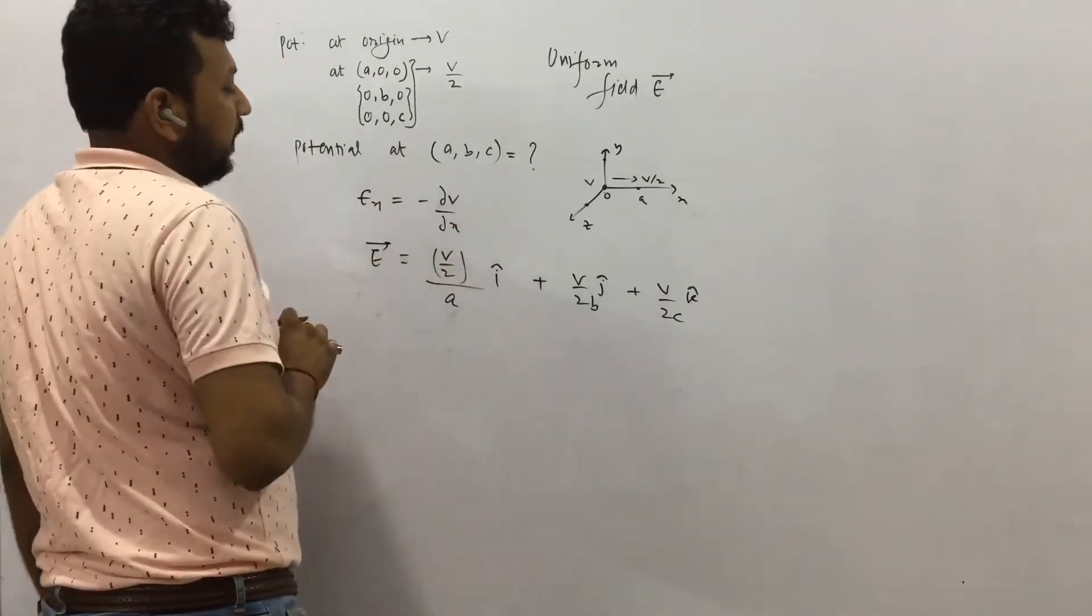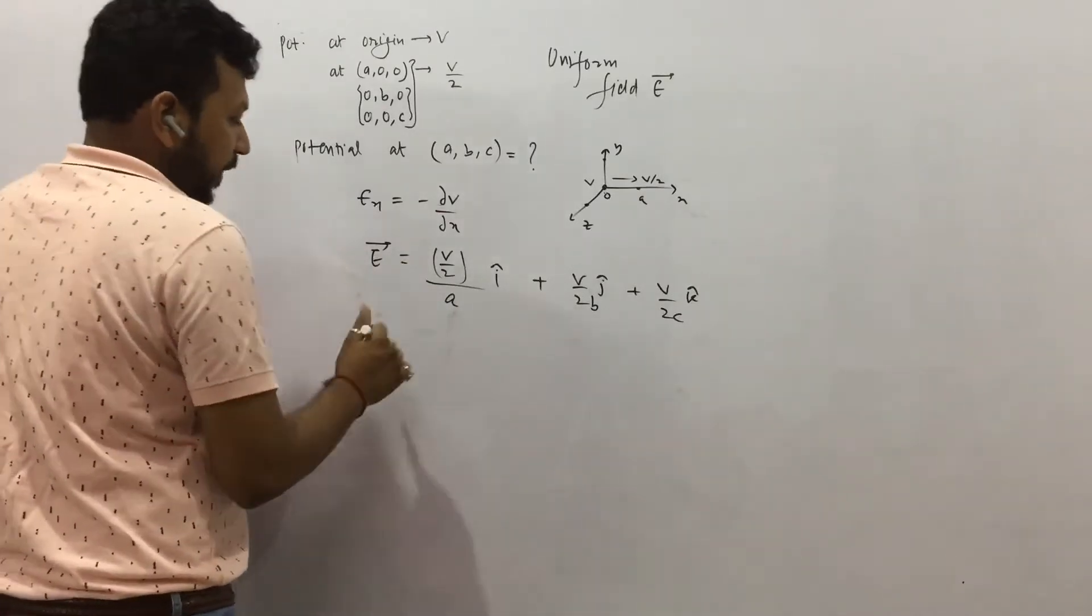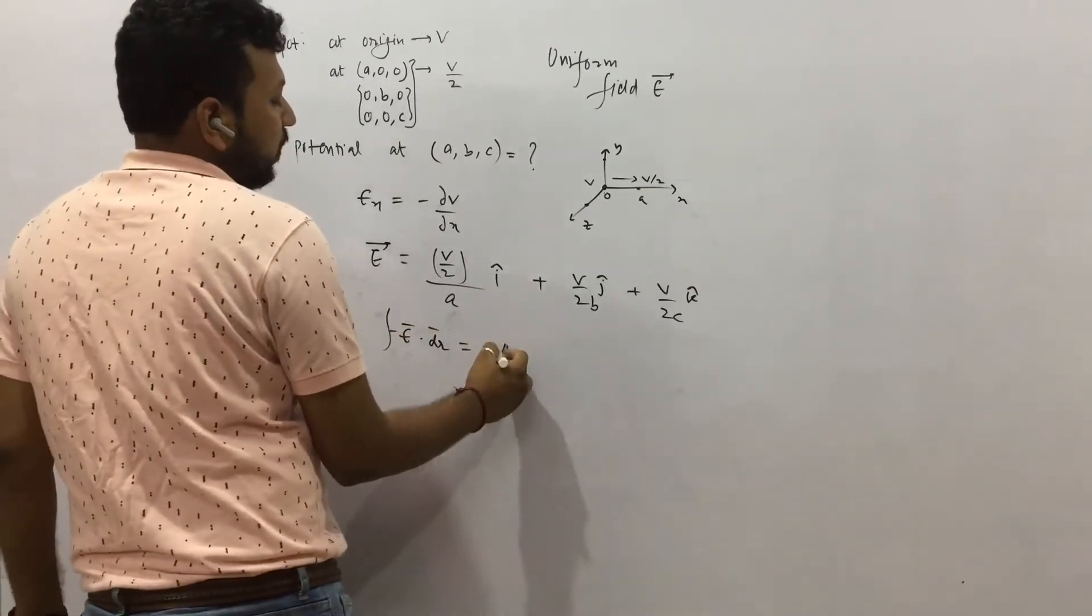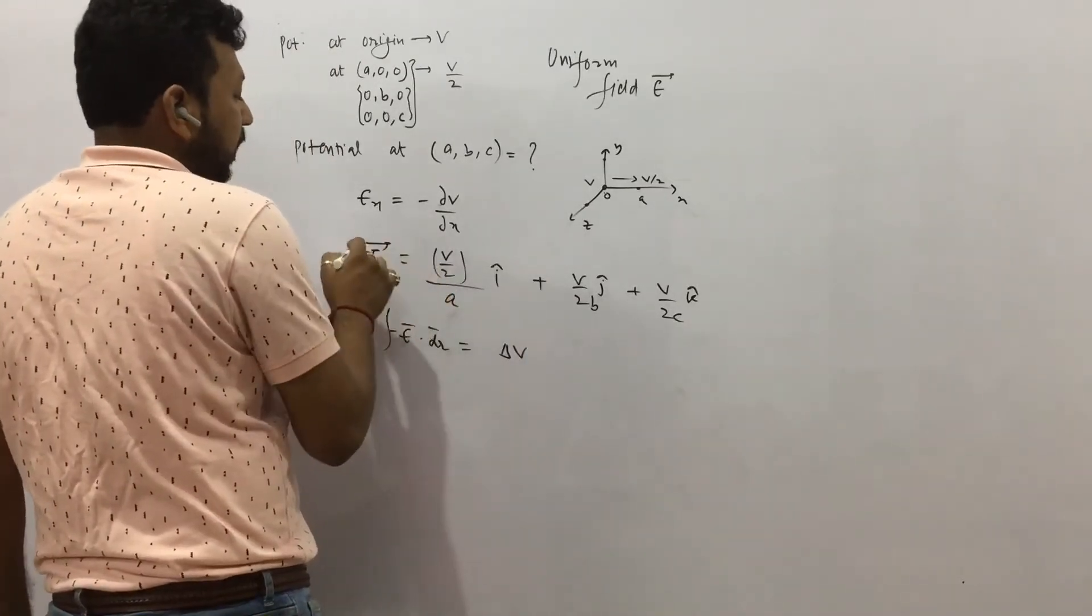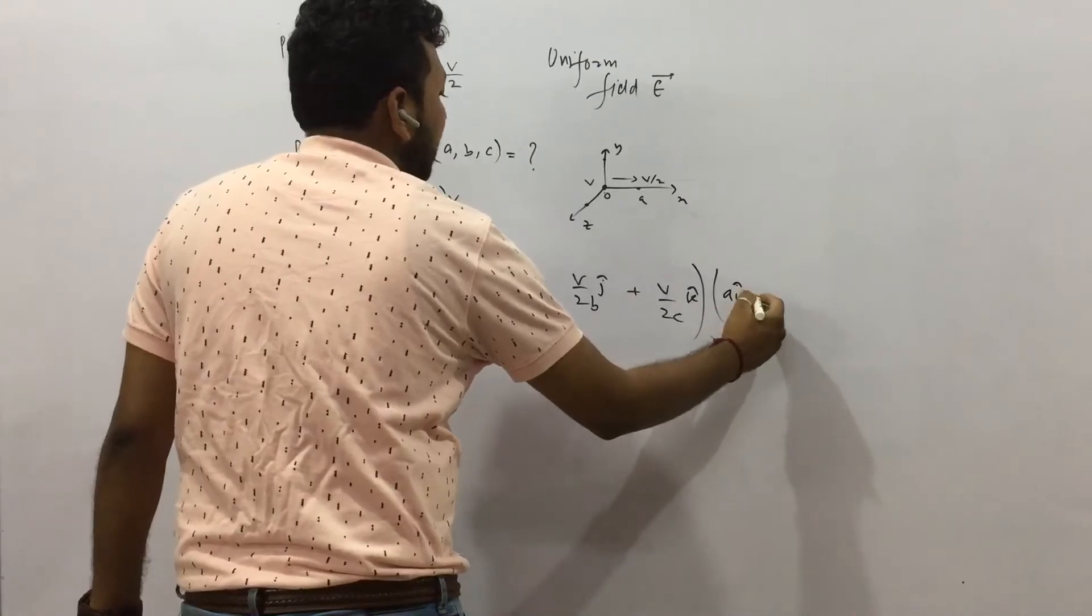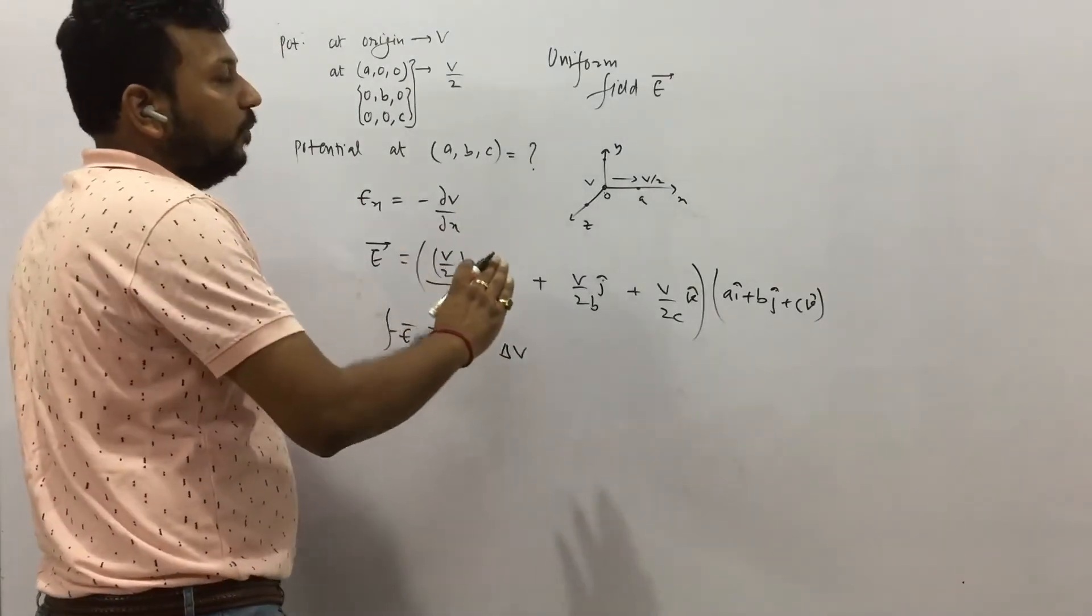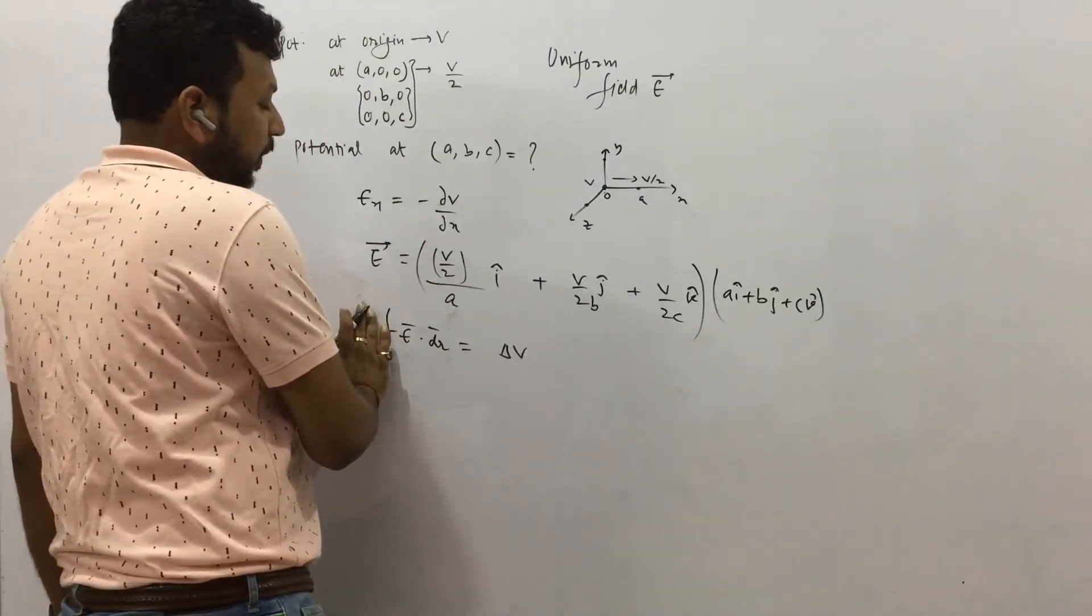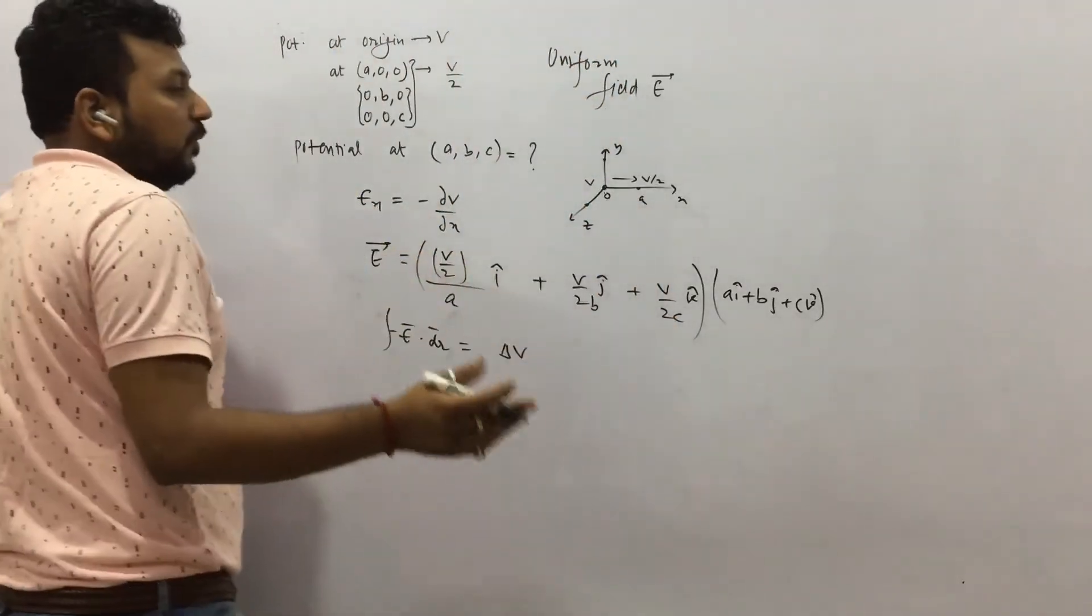Now if I see the potential at A, B, C, what will it be? Okay? So again I will write. I am erasing. Okay, I will add it. So again I can write E dot dR negative integration is equal to delta V. I can write like this. Now electric field is this. And the distance now is how much? A i plus B j plus C k. Right? The distance is A i plus B j plus C k. I need to move from (0,0,0) to A, B, C now. So again E dot dR I am going. So obviously potential will be less at A, B, C. Because electric field is in the direction of decreasing potential.